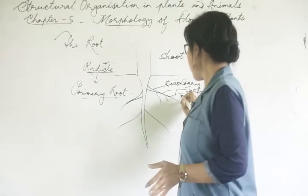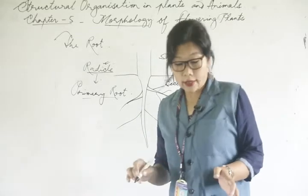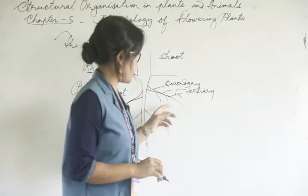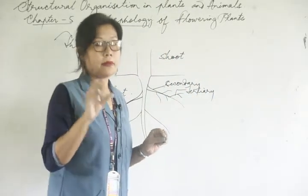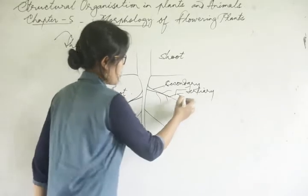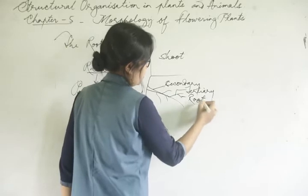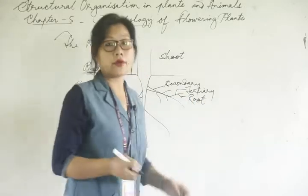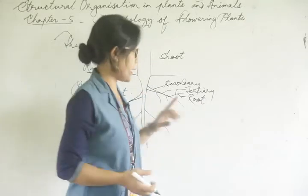From the tertiary roots, you will find root hairs — these are like outgrowths from the tertiary roots. The main role of roots is absorption of water and minerals.